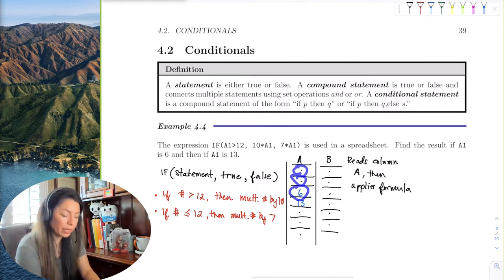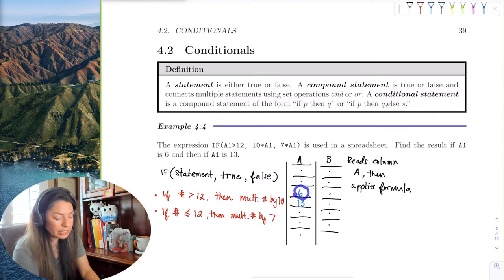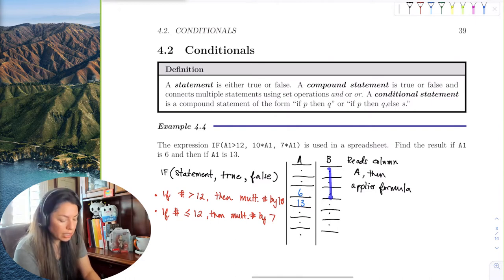So what's going on here is in column A—here's column A row 1, column A row 2, column A row 3. So if it reads that the cell is 6, the number in that little box is 6...